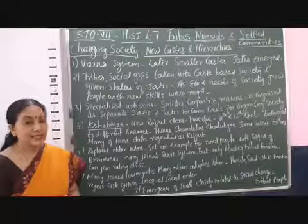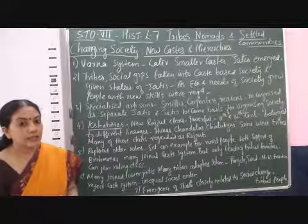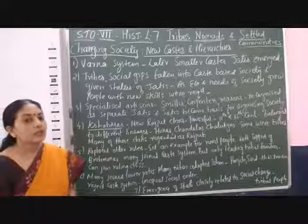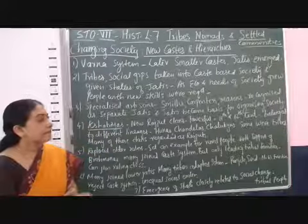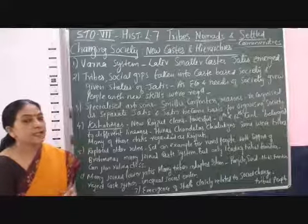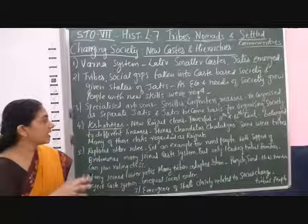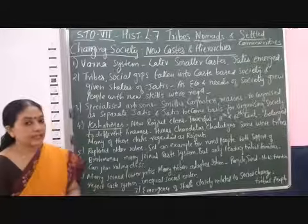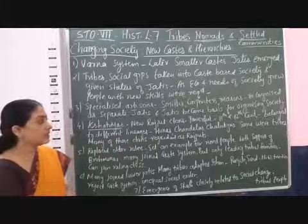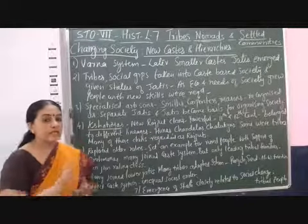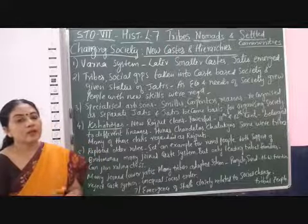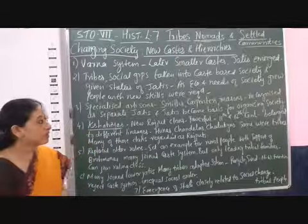There were many people practicing different skills — there were smiths, gold smiths, black smiths, carpenters, and basket weavers. They were all recognized as separate Jatis and included in the caste-based society, and their Jatis became the basis of the organization of society.